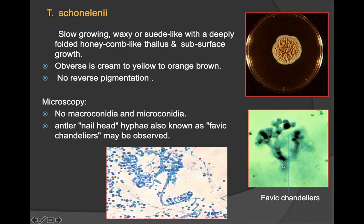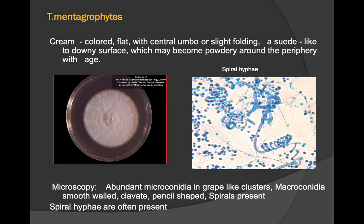Trichophyton mentagrophytes are cream-colored and flat with a central umbone or slight folding, with a suede-like or downy surface that may become powdery around the periphery with age. The important identification feature is spiral hyphae. Microscopy shows abundant microconidia in grape-like clusters, smooth-walled clavate pencil-shaped macroconidia, and characteristic spiral hyphae.